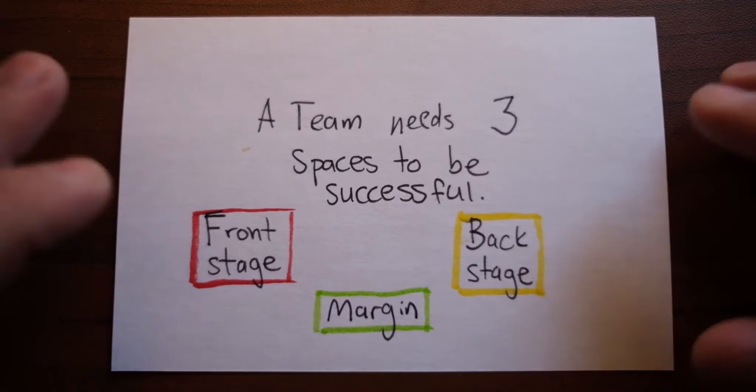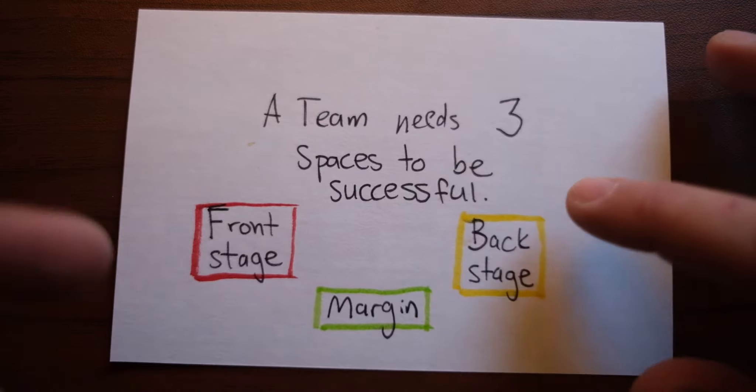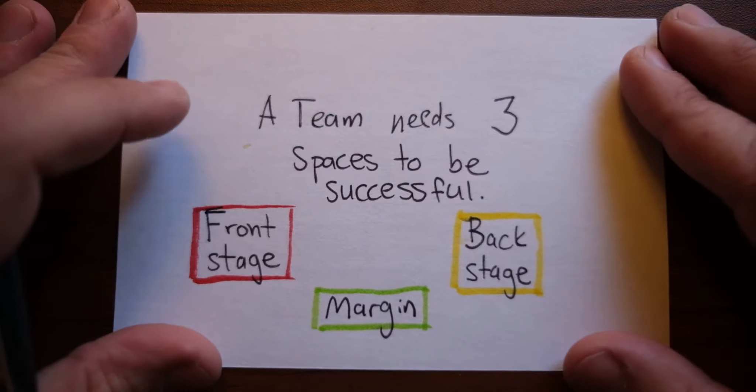In fact, two of these spaces already pop up in literature. Front stage and backstage have already been discussed by people like Goffman in 1959.